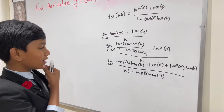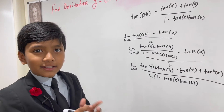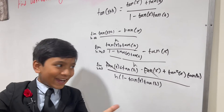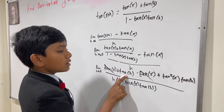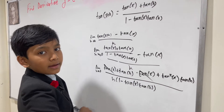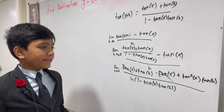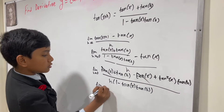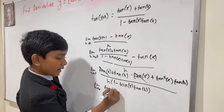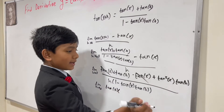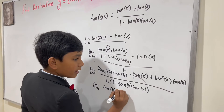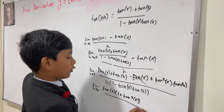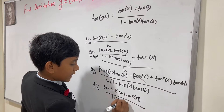What can we do here? I see an opportunity — cancel, cancel! Now, the remaining two factors on the top both have the factor tan h, so we're going to factor out tan h on the top. That gives us tan h times (1 plus tan squared x), over h times (1 minus tan x tan h).